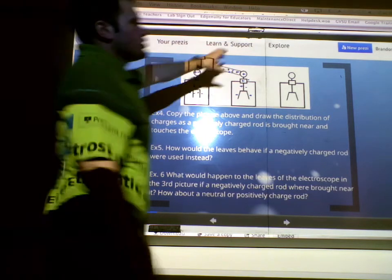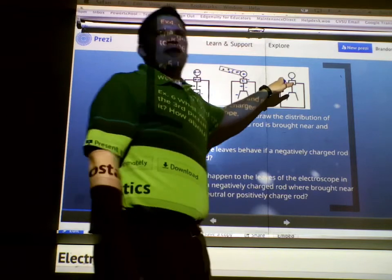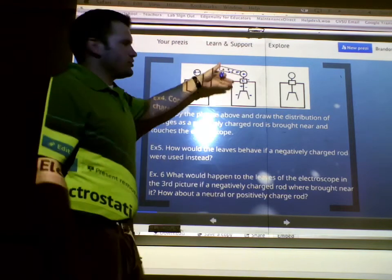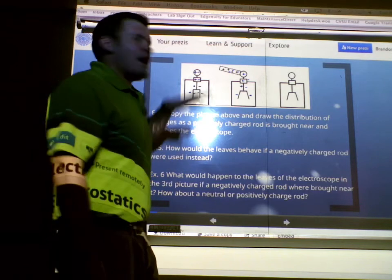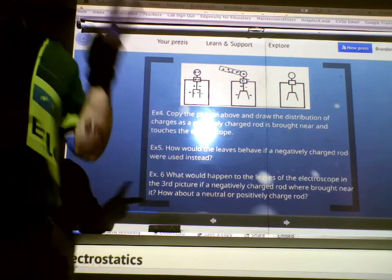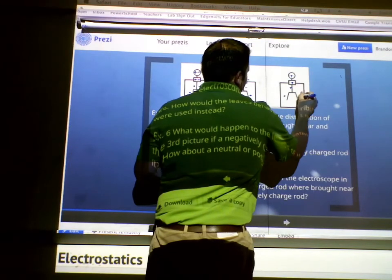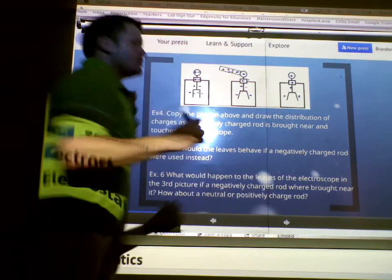So, then when this charged rod has been taken away, how many positive charges do I have? 1, 2, 3, 4, 5. How many negative charges do I have? 2.